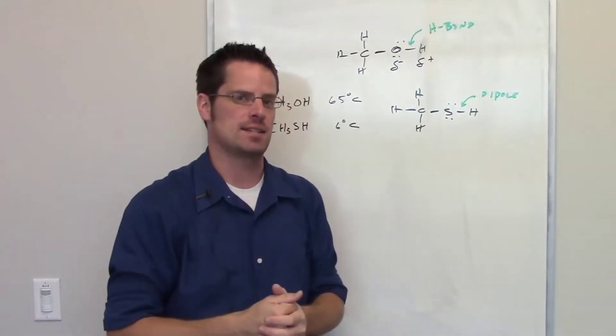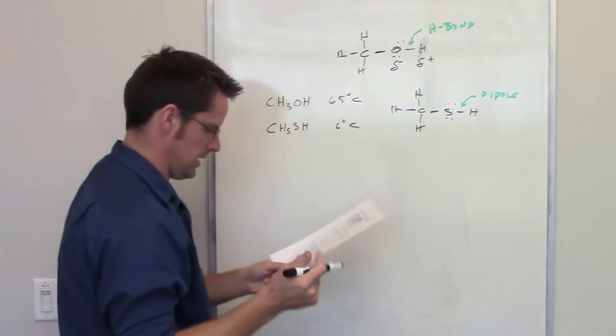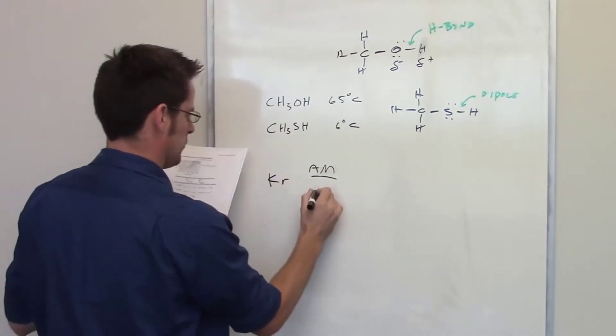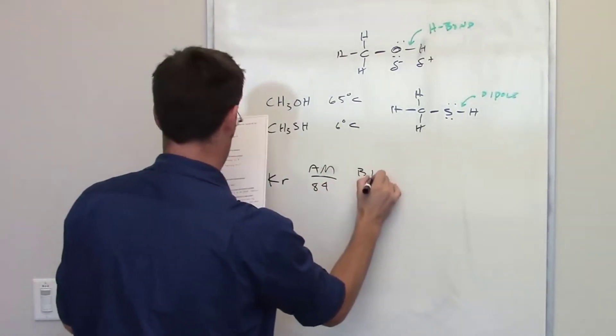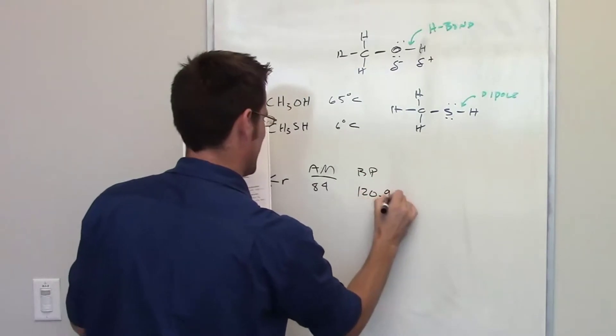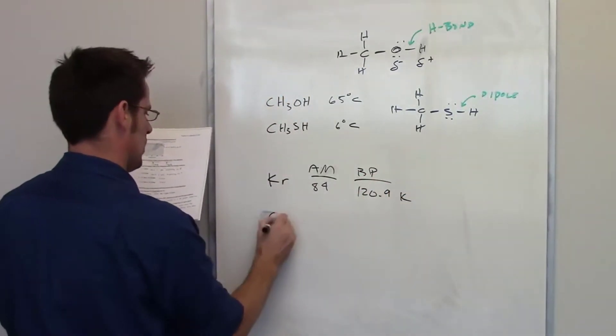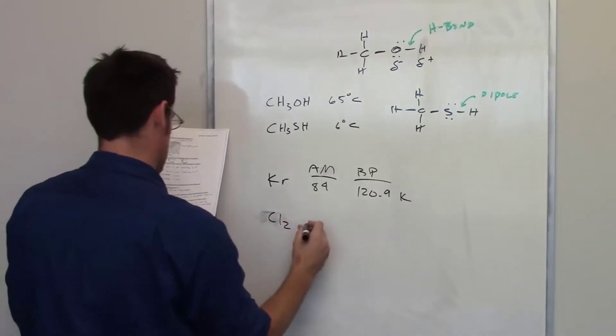The second question shows that krypton has an atomic mass of 84 and has a boiling point of -120.9 kelvins, while chlorine gas has a molecular weight that is a little bit less, 71, but boils at a much higher temperature.